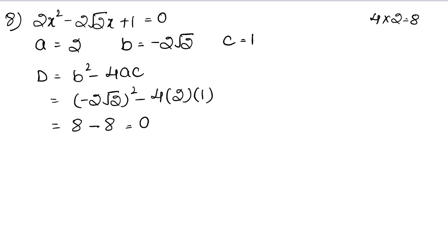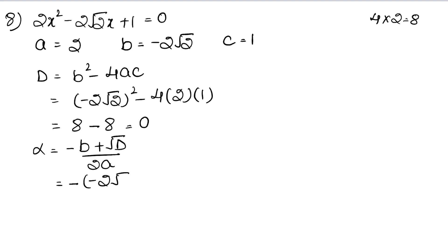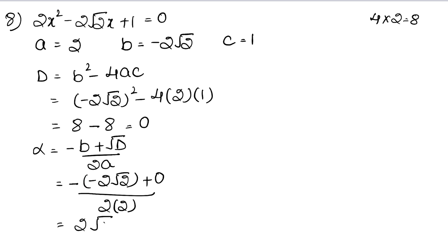Since D equals 0, we can find alpha and beta. Alpha equals (minus B plus √D) upon 2A. Substituting: minus B is minus(minus 2√2), plus √0, upon 2 times 2. Minus minus gives plus, so we get 2√2 upon 4.